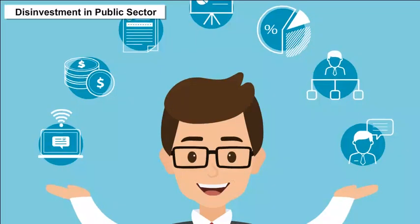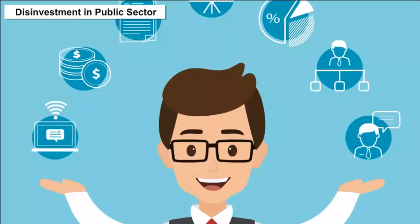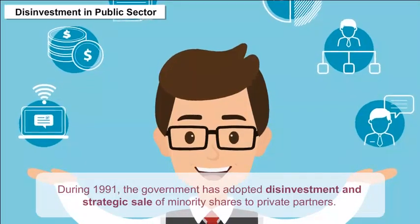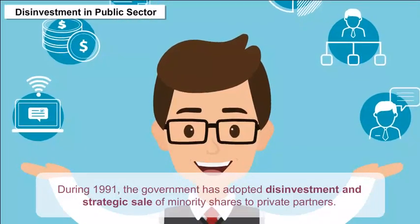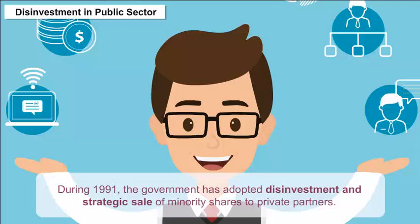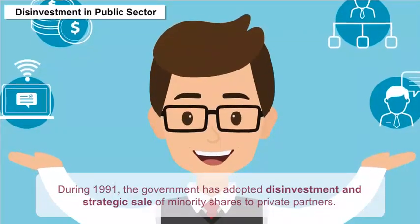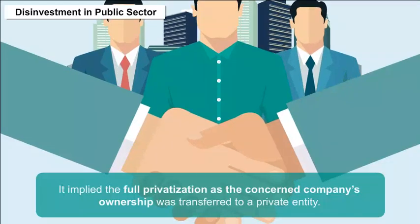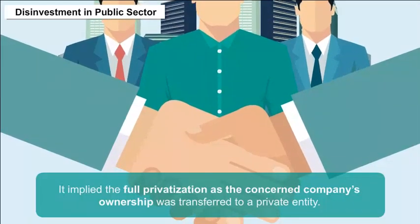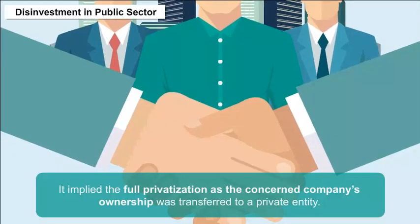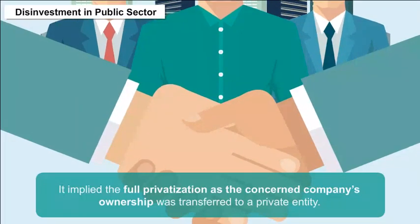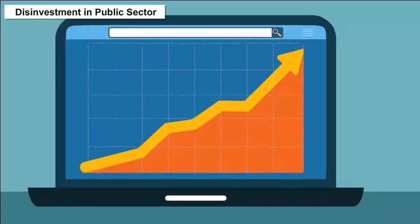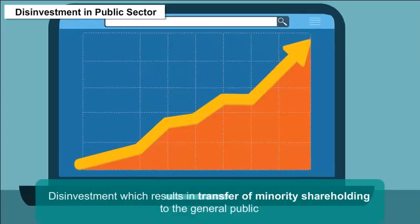Disinvestment in the Public Sector: During 1991, the government adopted disinvestment and strategic sale of minority shares to private partners. This implied full privatization where the concerned company's ownership was transferred to a private entity, but the main form of inviting private participation was disinvestment.